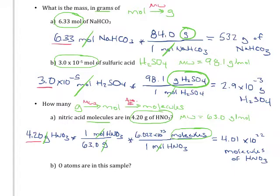The next question asks how many atoms of oxygen are in the sample. We can start similarly by changing grams into moles. But instead of thinking about entire molecules, we want to think about just the oxygen atoms. Before doing any calculations, let's think about the game plan: go from grams of the acid into moles of the acid, then moles of oxygen, then atoms of oxygen. So it's going to take three conversion factors instead of just two.